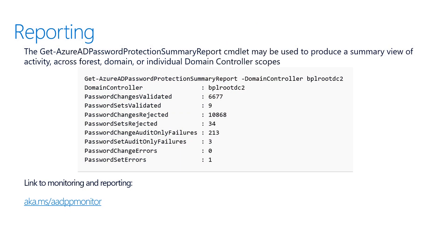After deployment, monitoring and reporting are essential tasks, done either by event log messages or by running PowerShell cmdlets. The DC agent and proxy services both log event log messages. On each domain controller, the DC agent service writes the results of each individual password validation to the DC agent admin event log. The Get-AzureADPasswordProtectionSummaryReport cmdlet may be used to produce a summary view of activity across forest, domain, or an individual domain controller scope. Visit the link in the video for more details on monitoring logs and generating reports.